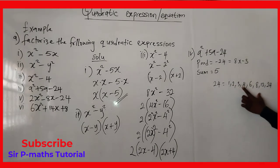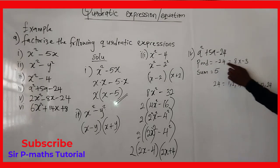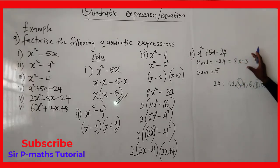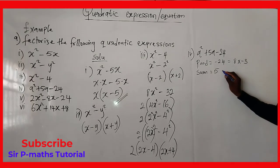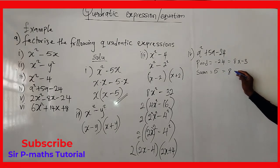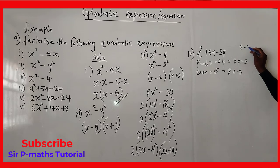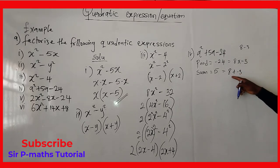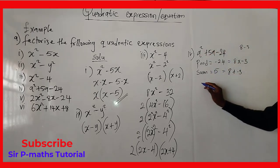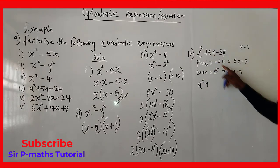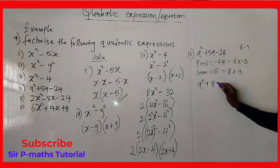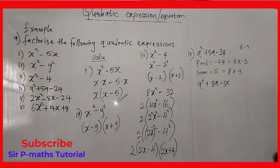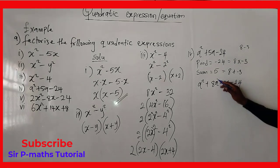From those factors, we look for two numbers that multiply to give -24 and add to give 5. That is 8 and -3: 8 times -3 gives -24, and 8 + (-3) = 5. So we replace 5a with 8a - 3a, giving us a² + 8a - 3a - 24.